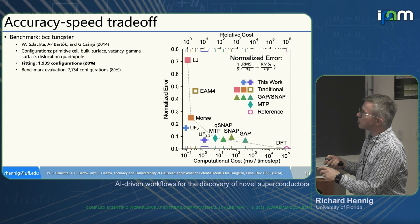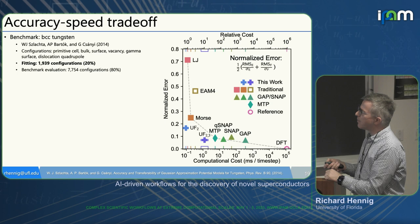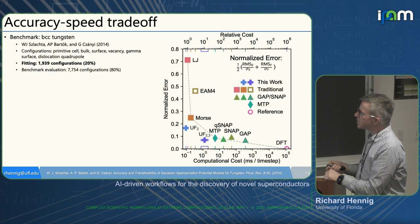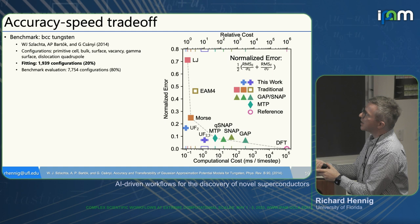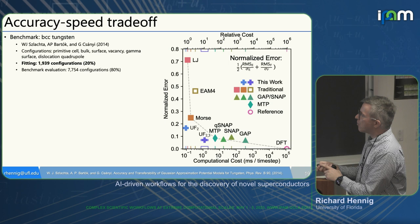I'm showing results for the BCC tungsten dataset published by Gabor Csányi in 2014, containing about 10,000 configurations — primitive cells, bulk cells, surfaces, vacancies, gamma surface, dislocation quadrupoles. We used 20% for training and left 80% for benchmarking, to emulate small datasets like we often have early in a GA. We refit a Lennard-Jones, Morse, SNAP, q-SNAP, GAP, and moment tensor potential, comparing also with our ultra-fast force field methods — UF2 with only a two-body term and UF3 with two- and three-body terms.